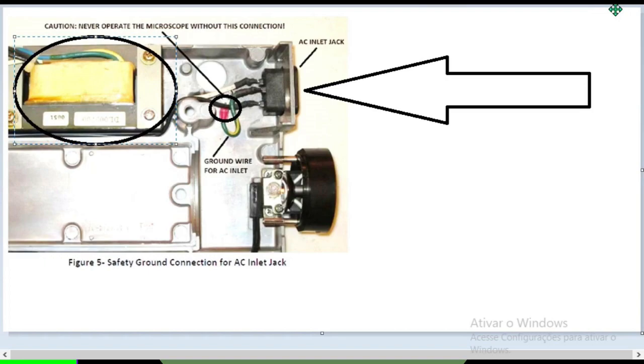Retomando no assunto da proteção elétrica, proteção do ser humano, do operador do microscópio. Os senhores podem observar que a carcaça do microscópio é metálica. Esses materiais são condutores de energia elétrica. Portanto, é necessário, é primordial o terceiro fio que é o sistema de aterramento.